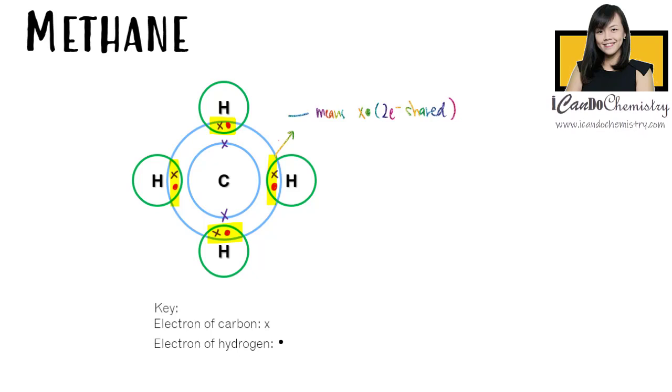In methane, the carbon atom shares each of its electrons with four different hydrogen atoms. We will replace each of the electron pairs with a bond. We have completed the structure of methane.